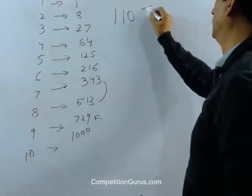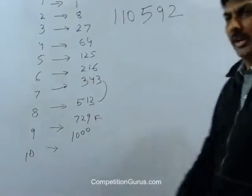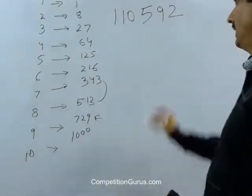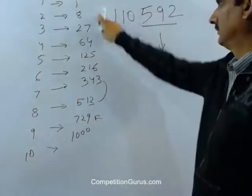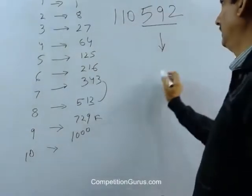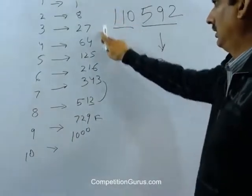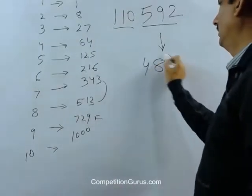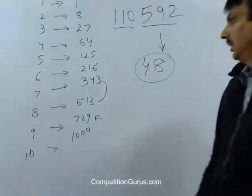Another example. Another perfect cube. 110592. Now you tell me, how will we do it? What are we going to place here? 8. Where does 110 fall? Between 4 and 5. Which is the smaller number? 4. 48. So cube root of 110592 is 48.